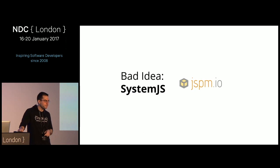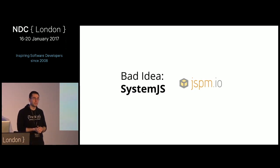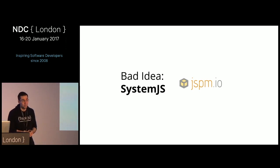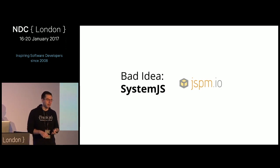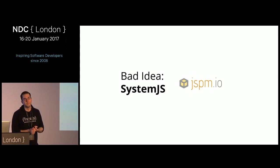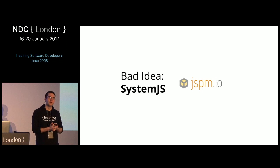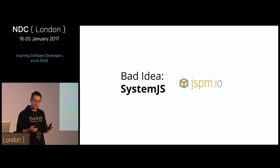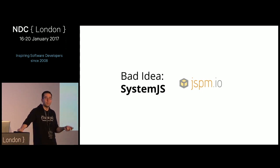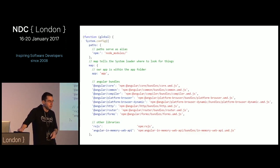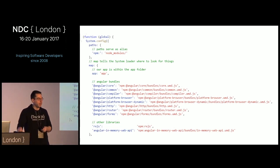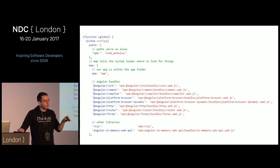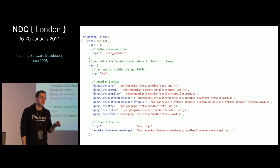Another bad idea in my opinion is SystemJS, also known as jspm.io. The jspm guys said: we've got Bower and npm and file systems — three different places packages come from — so let's make a fourth thing that coalesces all of those together. But now you have four things to maintain. You can see in the Angular 2 SystemJS config file, it's really just delegating to npm anyway.